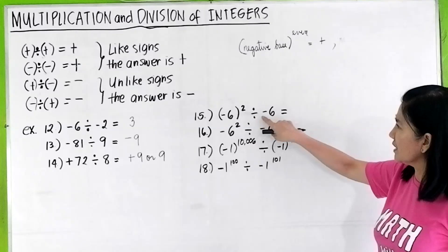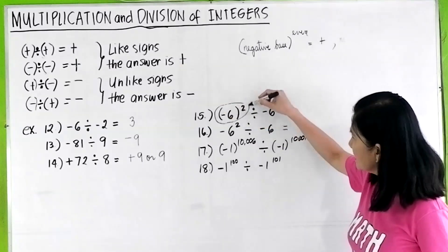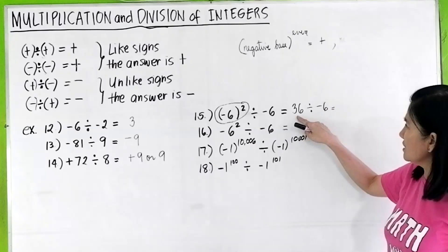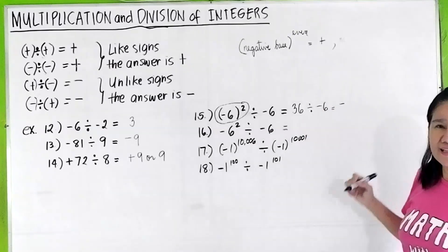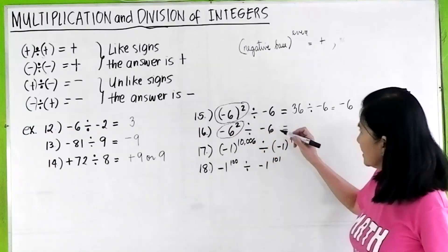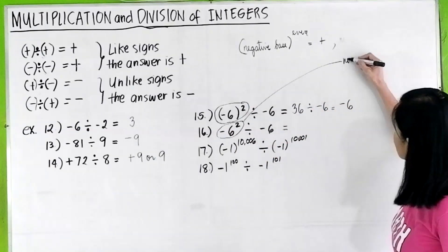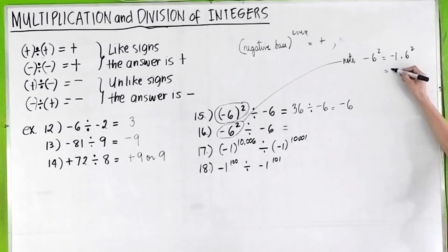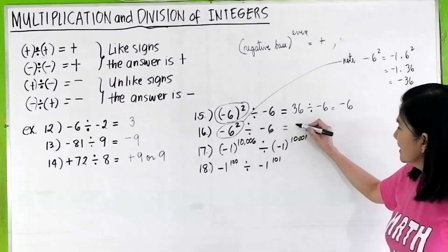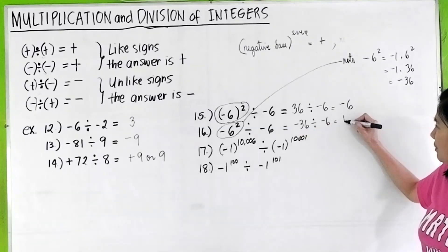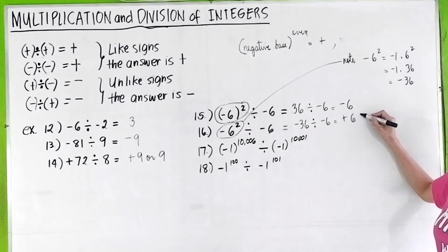Negative 6 squared divided by negative 6. This gives us positive 36 divided by negative 6. Positive divided by negative is negative. 36 divided by 6 is 6, so the answer is negative 6. But take note: if it is negative 6 squared without parentheses, this means negative 1 times 6 squared, giving negative 36. So negative 36 divided by negative 6 — negative over negative is positive — 36 divided by 6 is 6, giving positive 6.